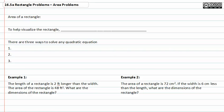So if you have the area of a rectangle, the formula for that is A, or area, is equal to length times width. To help visualize the rectangle, always draw a picture. This is where a picture is worth a thousand words really becomes true.